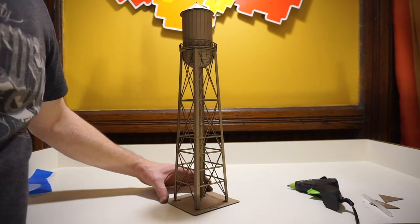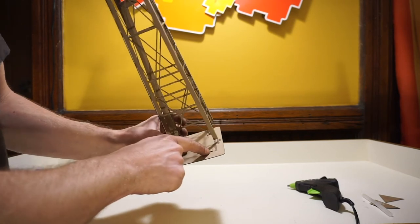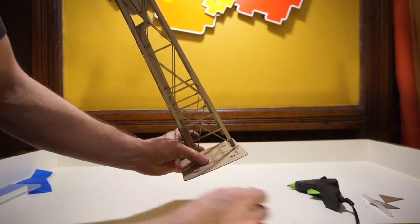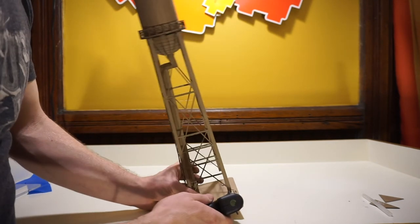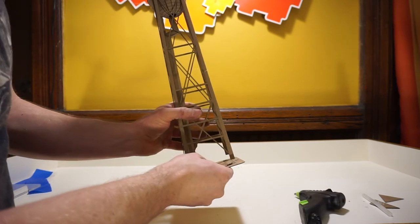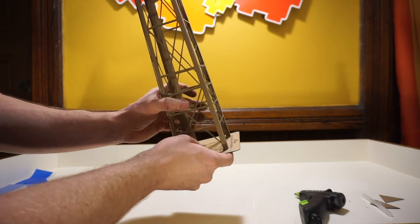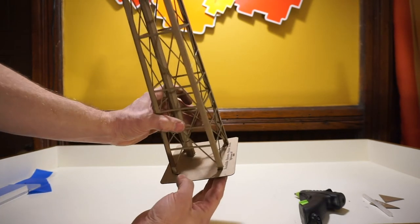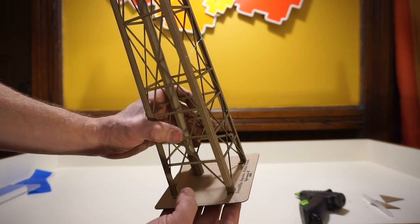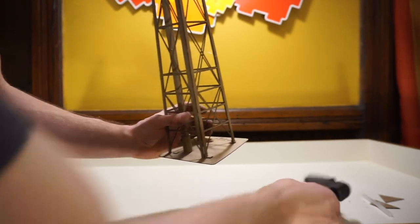And what we'll do next is apply glue to these little corner pieces. And all we need is a dot on either corner. Hold that till it cools, and then we can rotate and do the next piece.